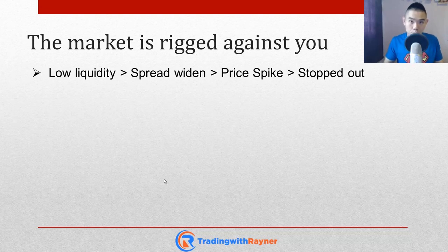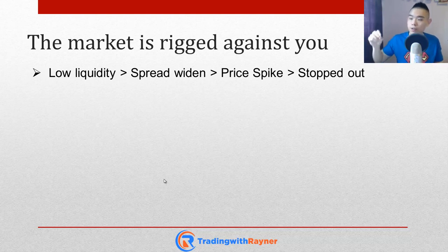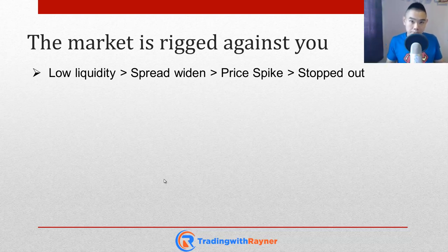So when the spread widens in the futures market, what happens in the spot market — the market that you're trading? Your broker will also widen the spread because they need to protect themselves. Because if not, arbitrages will come in and it will hurt their trading business. So when the futures market, currency futures, spread widens, spot market spread will also widen. In fact, your broker tends to widen the spread even more than the spread on the futures market, all because they want to protect themselves.